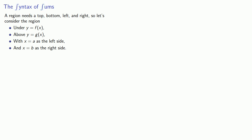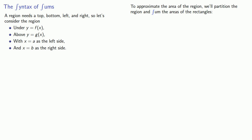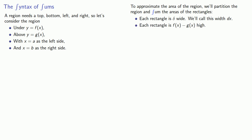To approximate the area of the region, we'll partition the region and sum the areas of the rectangles. We'll make each of the partitions of equal width, so we'll make each rectangle delta wide. Because we'll take this width as a little portion of the x-axis, we'll call this width dx. To find the area of a rectangle, we also need its height. Because the top of the rectangle is on y equals f of x and the bottom is on y equals g of x,